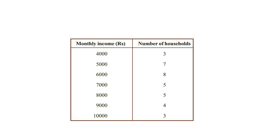Why do we make a frequency table? Suppose there are 100 students in a class. A class test is conducted and the total marks is 10. When the marks of 100 students are written, it is difficult to understand. The possible marks range from 0 to 10 — only 11 different values — but there are 100 students, so different students will get the same marks.